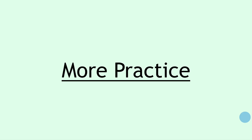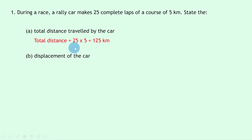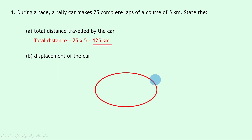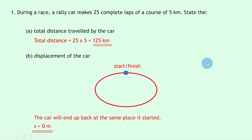Question one: during a race, a rally car makes 25 complete laps of a course of five kilometers. State the total distance traveled. Total distance = 25 × 5 = 125 kilometers. For displacement, if the car completes 25 full laps it ends up back at the same place it started, so displacement equals zero meters.